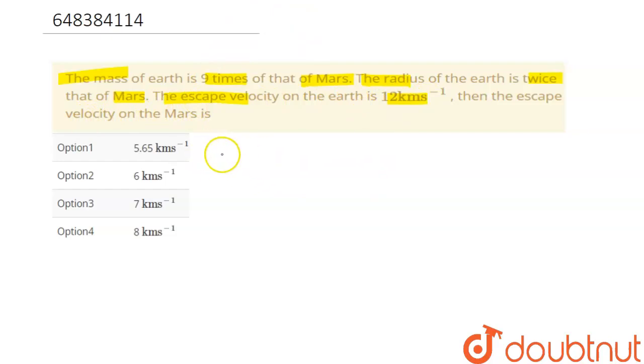First of all for earth, then for Mars. We're taking the mass for earth as capital M and mass of Mars as small m.